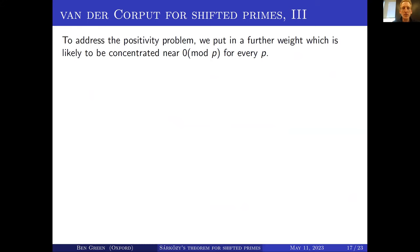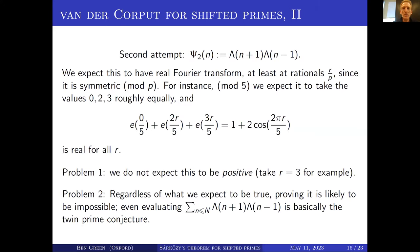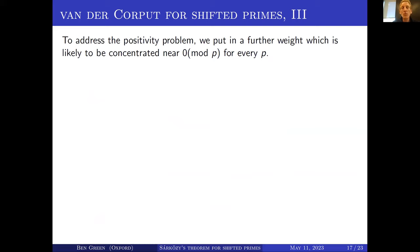Nonetheless, I'm going to carry on with that thought experiment and try to address the positivity property. The function λ(n+1)·λ(n−1), assuming standard Hardy-Littlewood conjectures on twin primes, we do expect it to have real Fourier transform but not necessarily a positive one. To make something that ought to have positive Fourier transform as well, we're going to put in a further weight which is highly concentrated near zero modulo p.